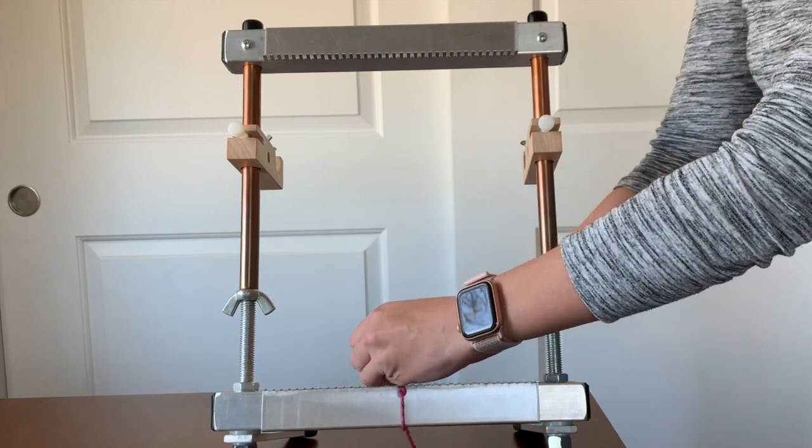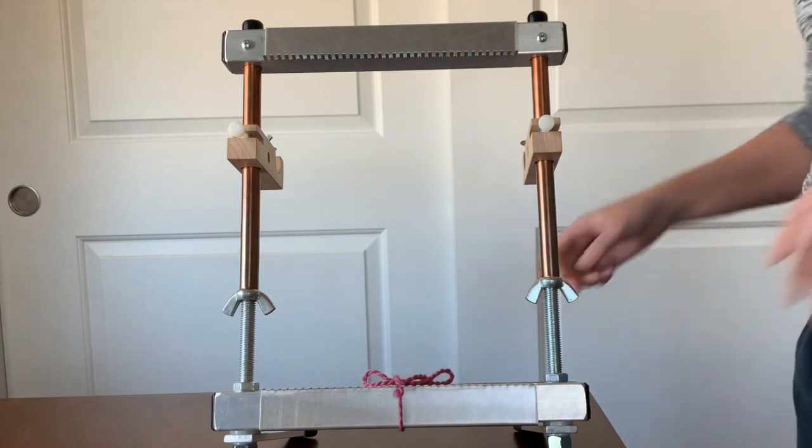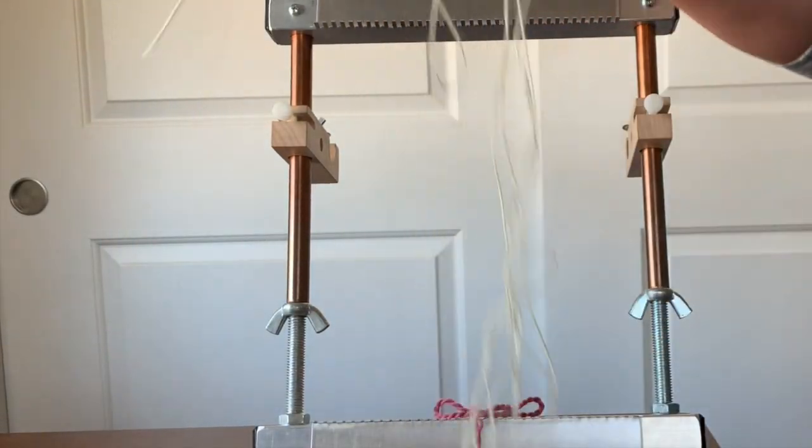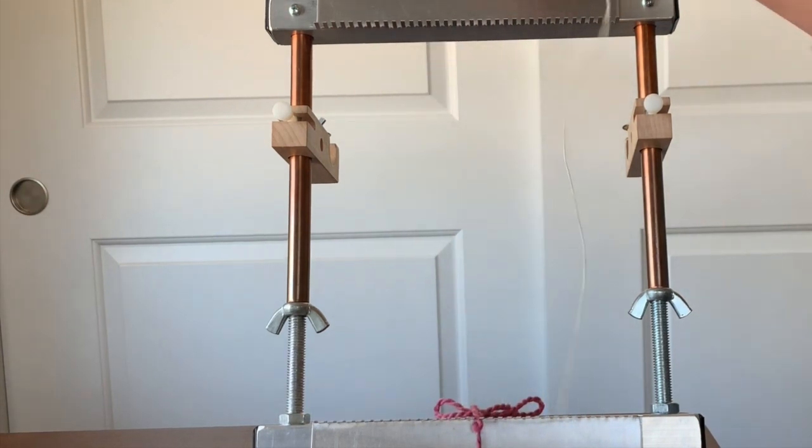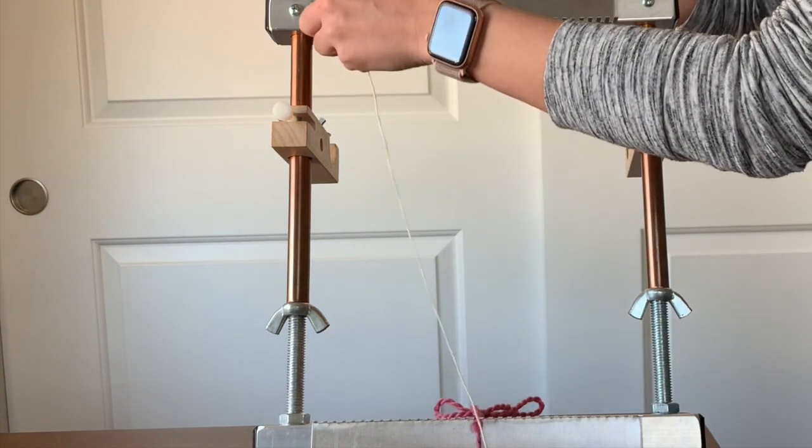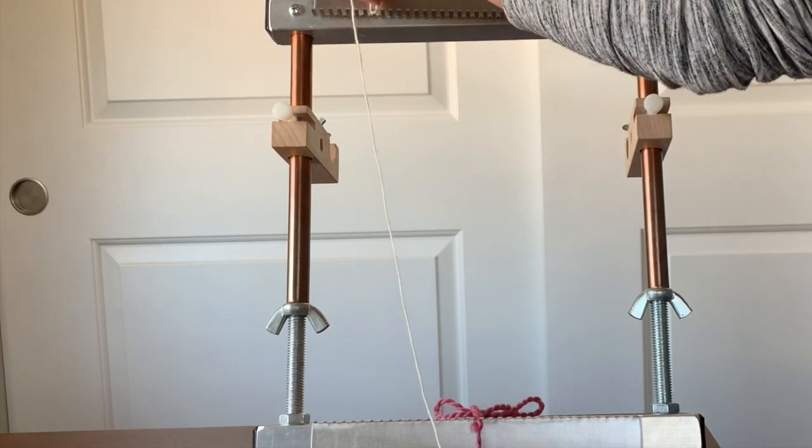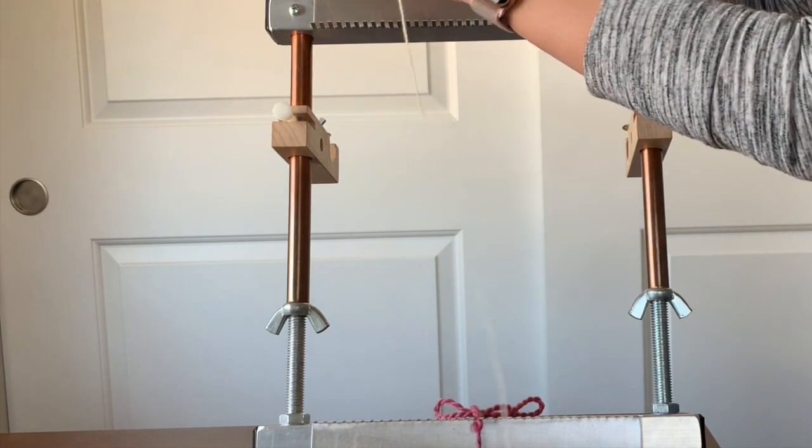Once you've started warping you can remove this string. Now all you need to do is take any piece of warp thread and you're just going to tie it to one of the tines.